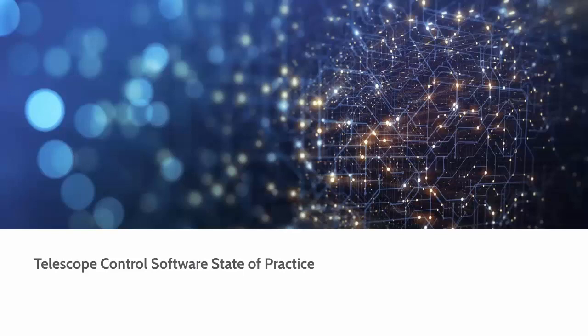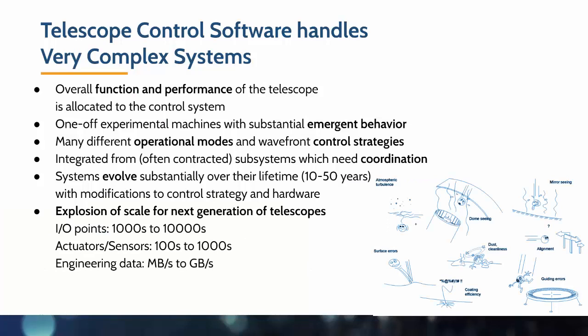Let's first look at the current state of practice for telescope control software. We face a number of challenges handling these complex systems. Telescopes are typically one-off experimental machines with substantial emergent behavior which comes together once the system is integrated, with subsystems that require coordination and have to support many different operational modes and control strategies. Due to their long lifetime ranging from 10 to 50 years, the systems often evolve substantially with sometimes significant modifications to the control strategy and hardware.